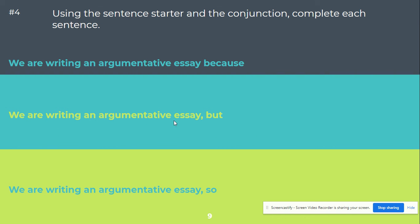Second, we are writing an argumentative essay, but, then you are going to complete the sentence. For this last one, it needs to show cause and effect. We are writing an argumentative essay so make sure that whatever you add after this you can't say so that before the rest of your sentence. So for example, we are writing an argumentative essay because we have just finished reading a bunch of texts about arguments. We are writing an argumentative essay, but we need help on how to do it. We are writing an argumentative essay so we can become better writers.